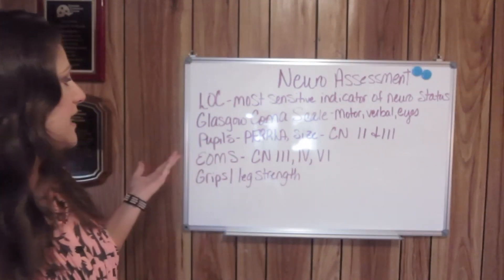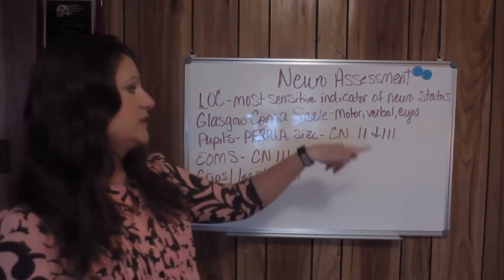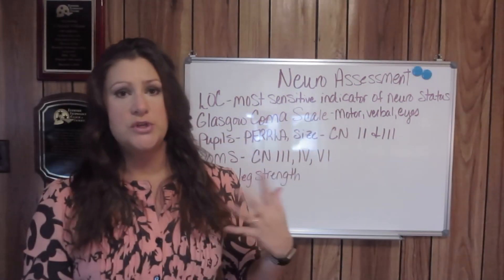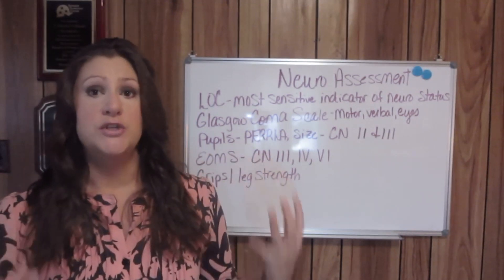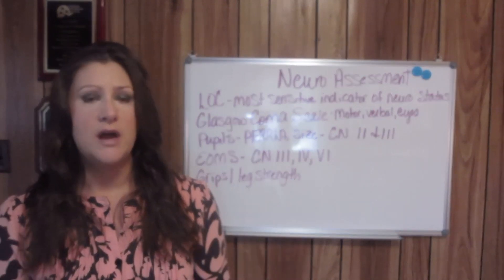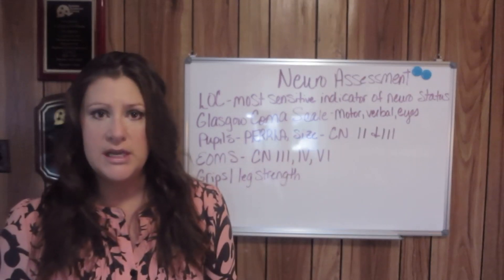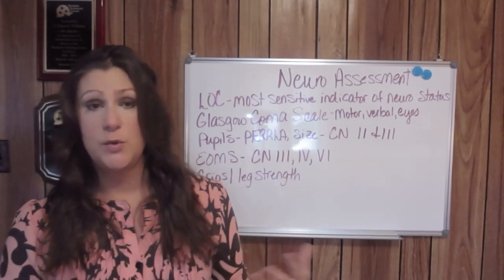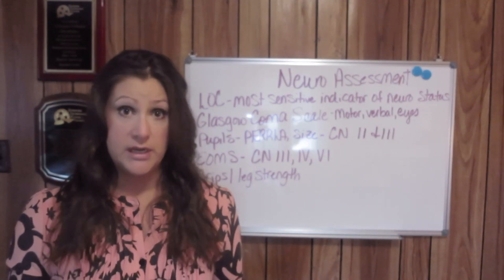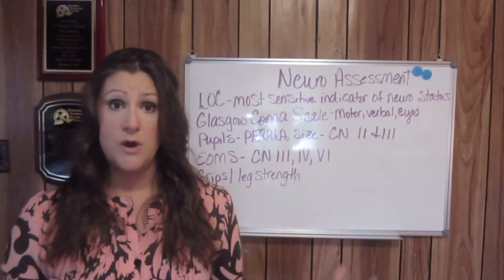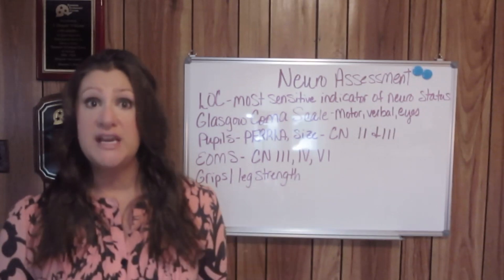Mental status is included in the Glasgow Coma Scale. We are doing our Glasgow Coma Scale on our adult patients in the hospital. The lowest number you can get on the Glasgow Coma Scale is a 3 — a dead body can get a 3. The highest number would be a 15.